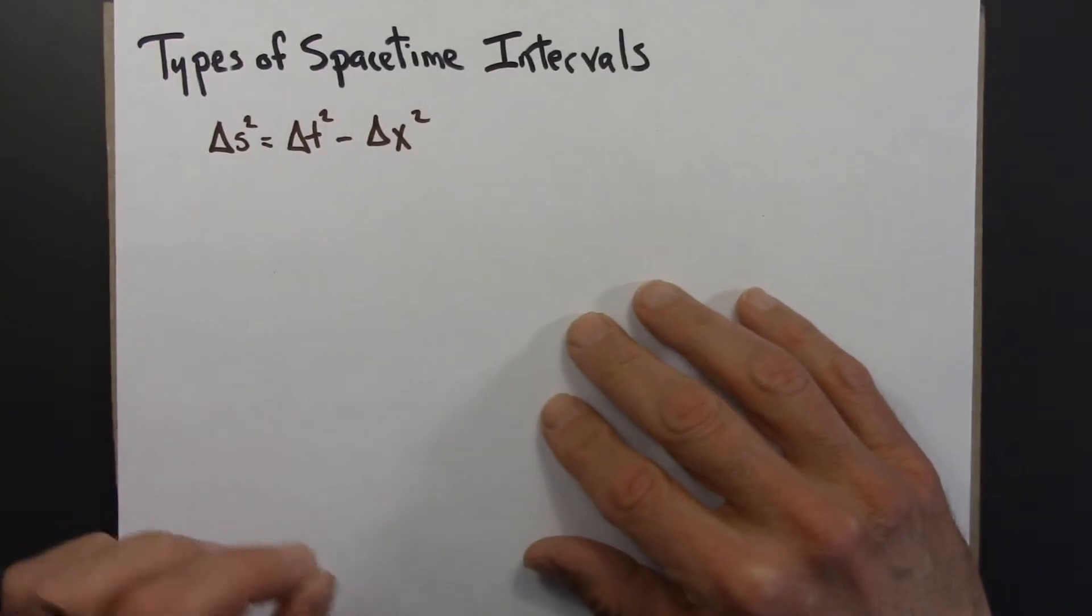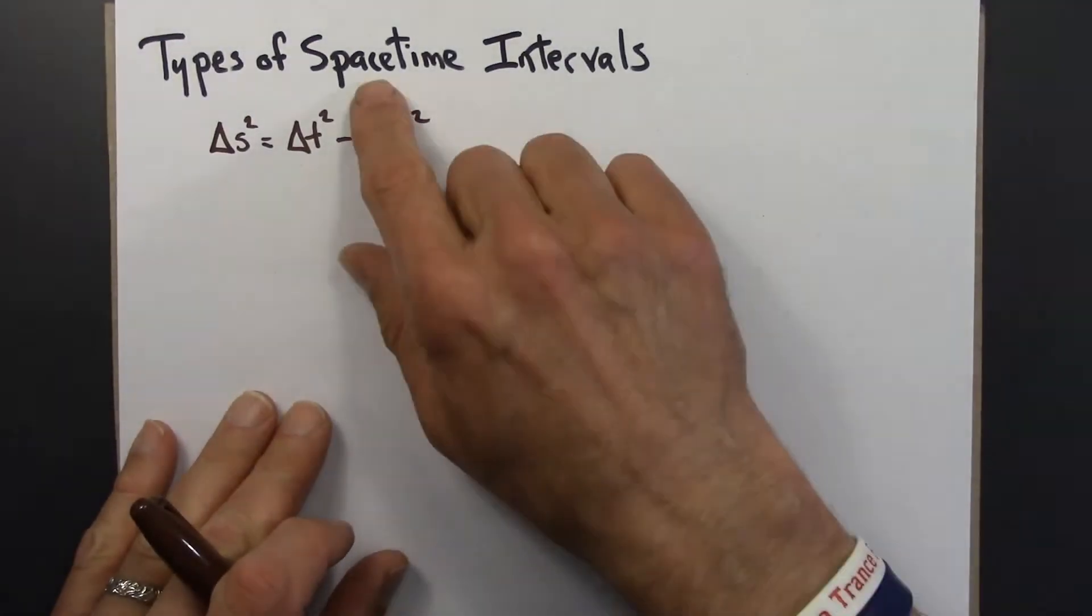To begin thinking about the causal structure of space-time, we're going to think about space-time intervals.